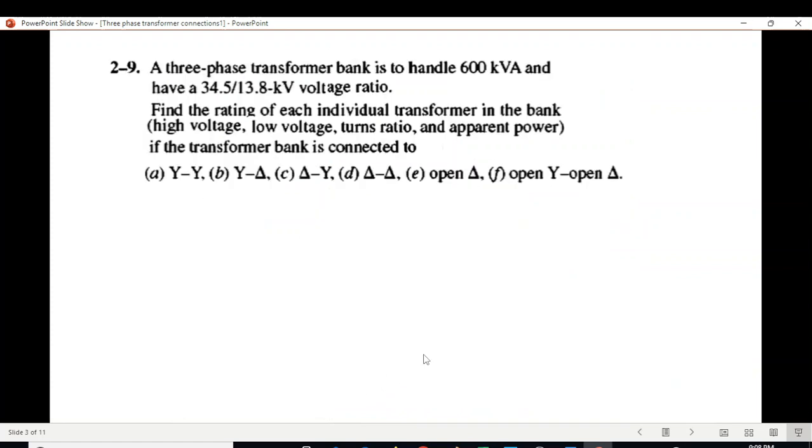Question: A three-phase transformer bank is to handle 600 kVA and have 34.5 to 13.8 kV voltage ratio. Find the rating of each individual transformer in the bank - rating, high voltage, low voltage, turn ratio, apparent power - if the transformer bank is connected as shown here. Let's discuss the first configuration.